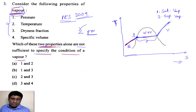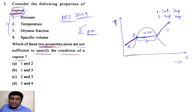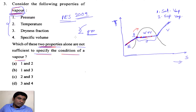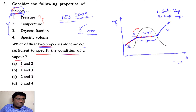That's what we learned in thermodynamics theory. Here, the temperature is constant throughout the phase change, and pressure is also constant throughout the phase change. If you know the pressure at any point, automatically you can calculate the corresponding saturation temperature. That means pressure and temperature are no longer independent here — they are dependent. So if I take properties 1 and 2, pressure and temperature, to represent the vapour in this case, that is no longer enough.